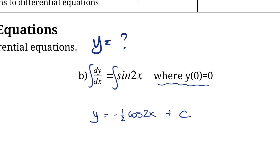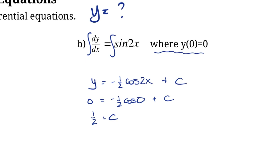We can plug that in to find specifically the c value. If we make y equal to 0 and x equal to 0, we can solve for c. Cos of 0 is 1, so we end up with negative one-half, and moving it to the other side gives us c equals one-half. So the exact solution to the differential equation is negative one-half cos 2x plus one-half. Any conditions you're given allow you to find the exact particular solution.